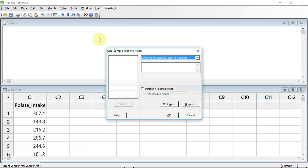I need to tell it which data we're going to look at. I'm going to click in this window and select the C1 folate intakes and select it with the selection button. I now need to tell Minitab what the mean is going to be. I'm going to tick the perform hypothesis test and then enter my value of 150 into the window that becomes available. I now press OK.